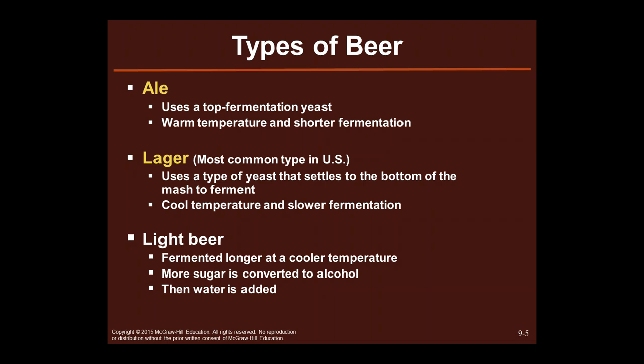Lagers are the most common in the U.S. — your big beer companies are lagers. This uses a type of yeast that settles to the bottom of the mash when it ferments, using a cooler temperature and a slower or longer fermentation process. Light beer is fermented longer at a cooler temperature. More sugar is converted to alcohol, and then they add water — which is why some people say their light beer tastes like water. The alcohol content is actually higher and then they add water, so the alcohol content of the whole thing ends up the same.